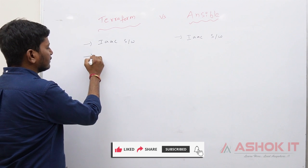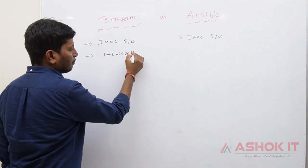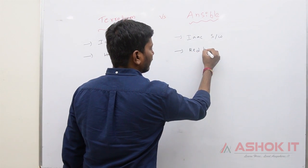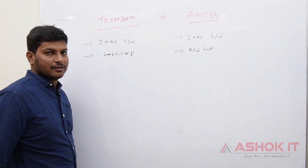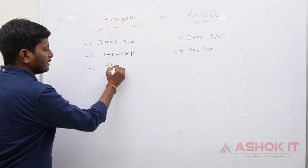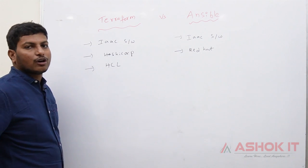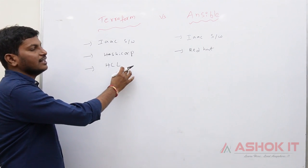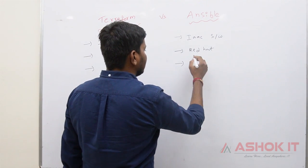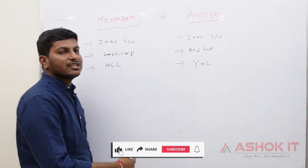Terraform software is developed by a company called HashiCorp, and Ansible is under the license of the Red Hat organization. Terraform uses HCL language — HCL stands for HashiCorp Configuration Language — to create the infrastructure. Ansible uses YAML for managing configurations.